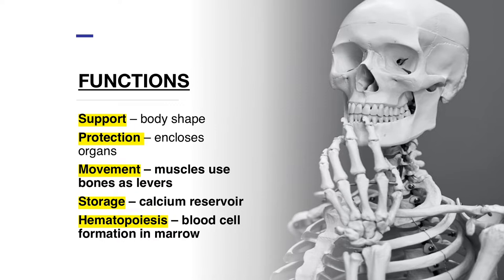Moving along, we get to storage — and storing exactly what? Calcium. Our bones are like a calcium reservoir. Calcium takes on different forms in the body; for example, there's ionized calcium, which is important for cellular functioning. Calcium is utilized in processes such as cardiac contraction, blood coagulation, transmission of nerve impulses, and muscular contractions. For the skeletal system specifically, calcium phosphate is vital in a process called calcification, which refers to the solidifying and hardening of our bones.